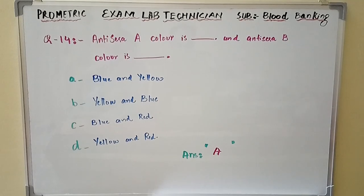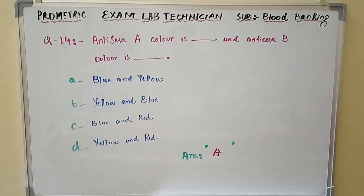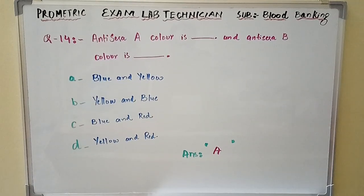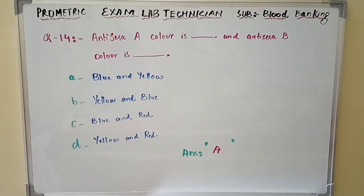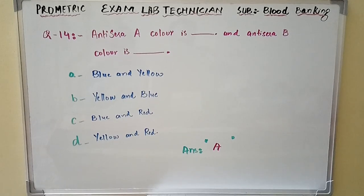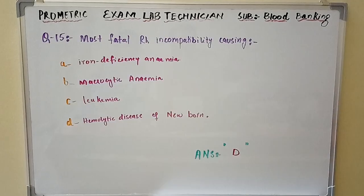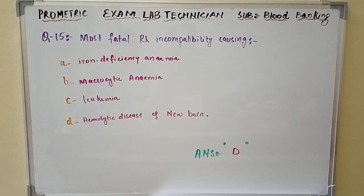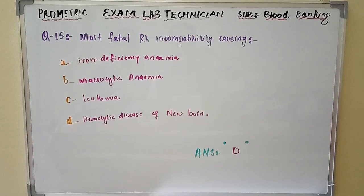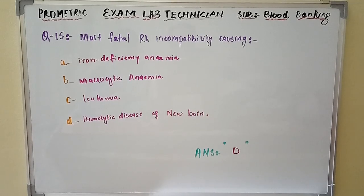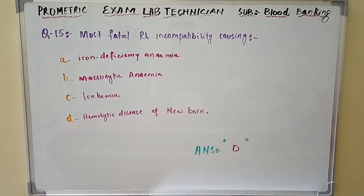Question number fourteen: Antisera A color is dash and antisera B color is dash — the answer is Option A: blue and yellow. Question number fifteen: Most fatal Rh incompatibility causing — the answer is Option D: hemolytic disease of newborn.